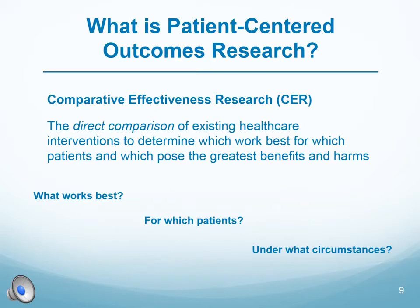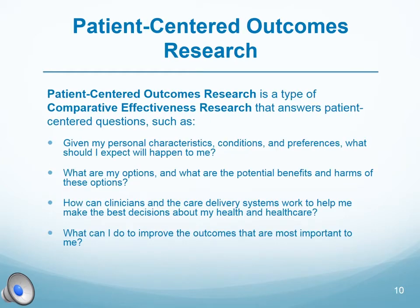What is patient-centered outcomes research? Let's back up and put this in context. Comparative effectiveness research is a specific kind of healthcare research. Not all medical research compares two interventions directly — comparative effectiveness research does just that. You can see the word 'patient' in the definition. Comparative effectiveness research should focus on what is best for the patient, but this has not always been the case in the past. Patient-centered outcomes research is a kind of comparative effectiveness research that specifically and directly answers questions that are important to patients. Here are four questions from PCORI to give you a sense of what questions PCORI is supposed to answer.